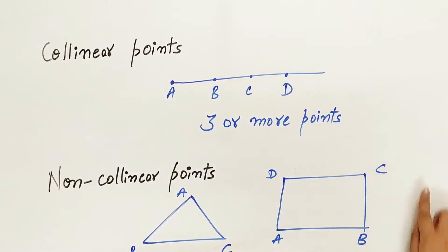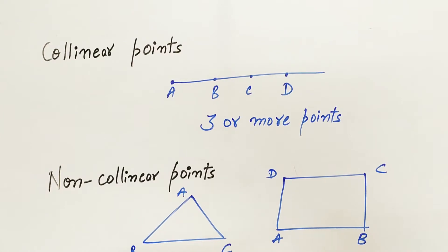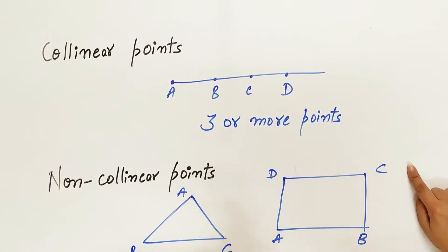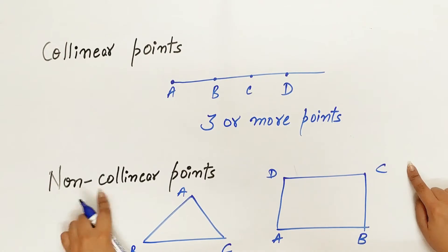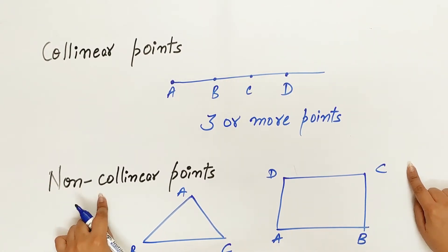All four points do not lie on the same line. A and B lie on the same line, but A, B, C do not lie on the same line — hence they are non-collinear.